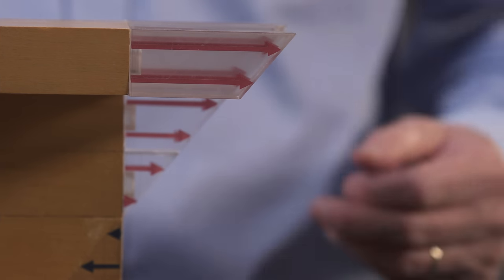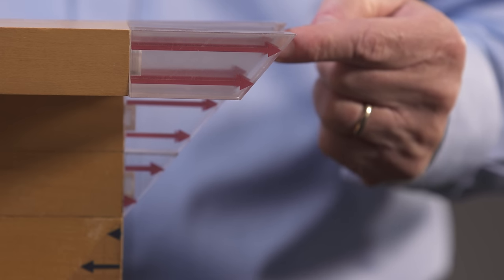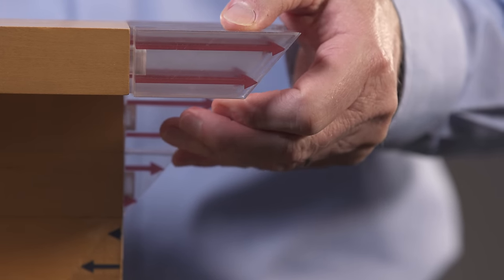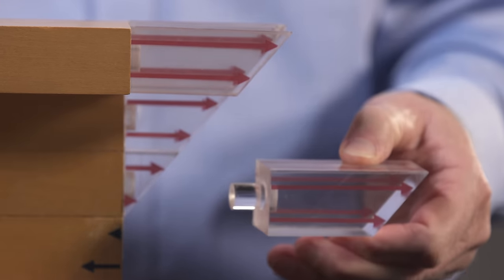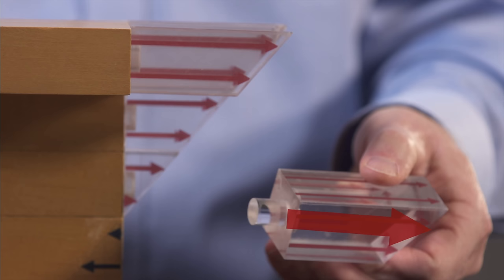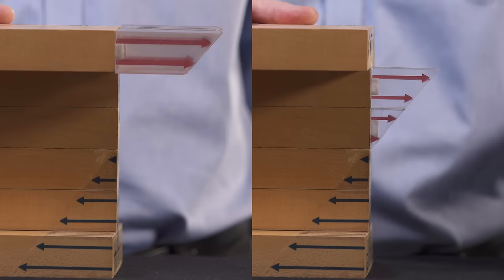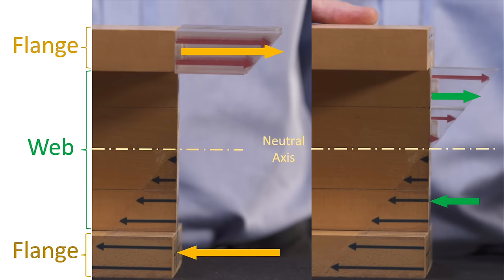Before we begin that discussion, however, notice that the length of each arrow is proportional to the magnitude of the stress that it represents. As a result, the volume of each plexiglass block is proportional to the force generated over its base area. As you can see, large forces are generated in the flanges, and smaller ones in the web.